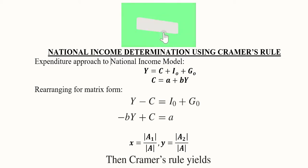Hi there, in this video we will learn about the application of Cramer's rule on national income determination model. We are resorting to the expenditure approach, so Y will be equal to the sum of these three terms. The consumption function is explained in detail, and investment and government expenditure are assumed to be autonomous, so Y and C become the endogenous variables.